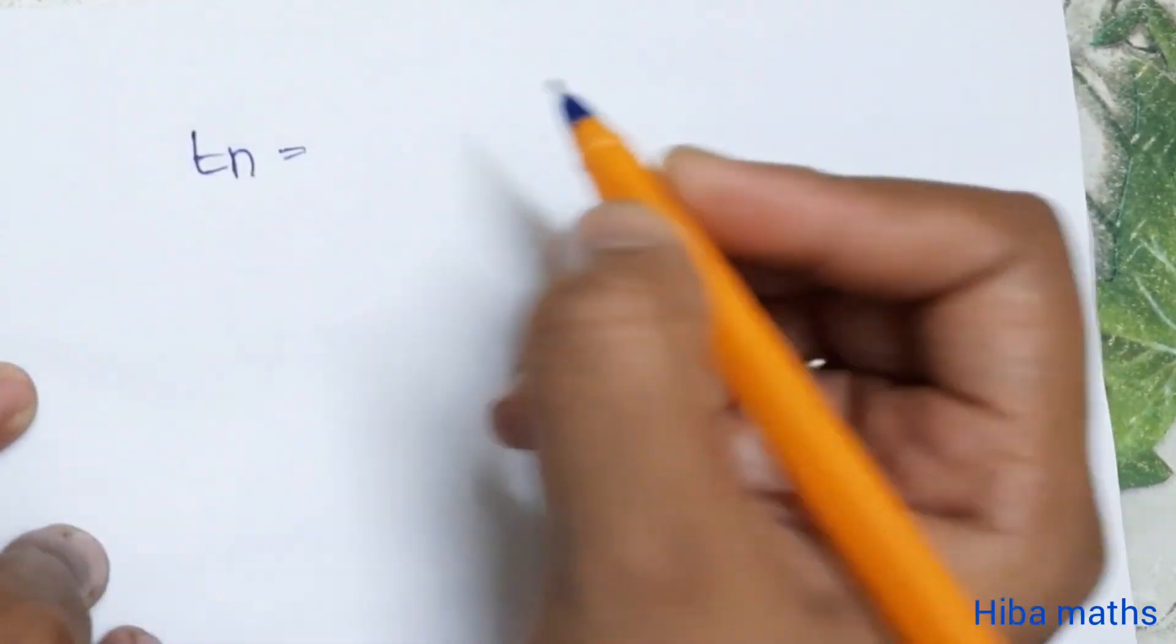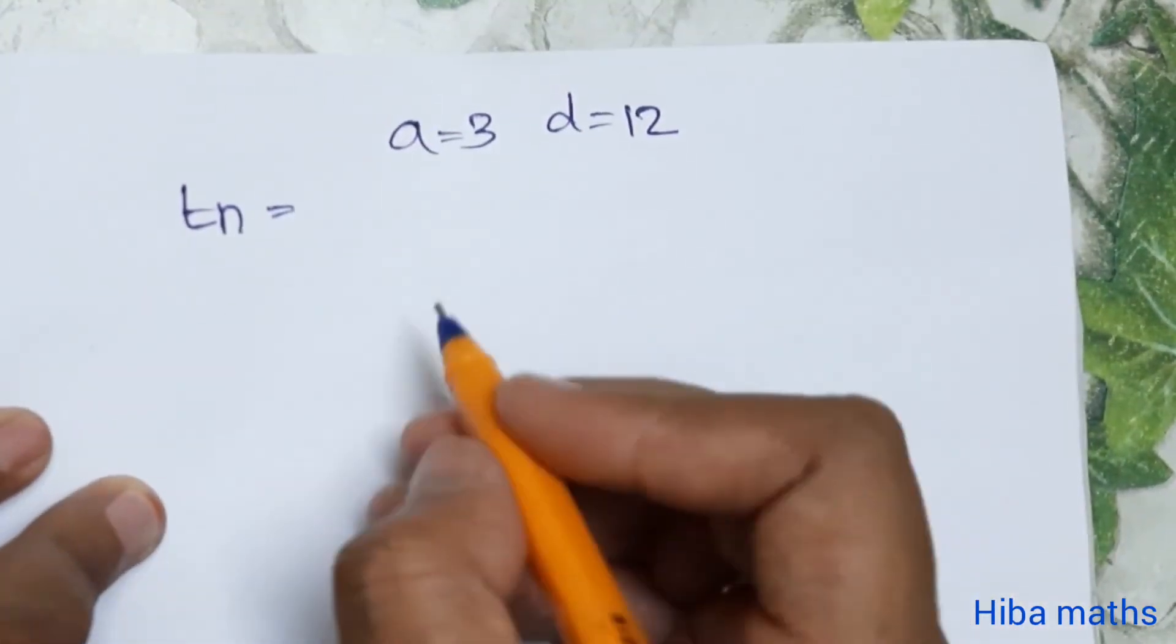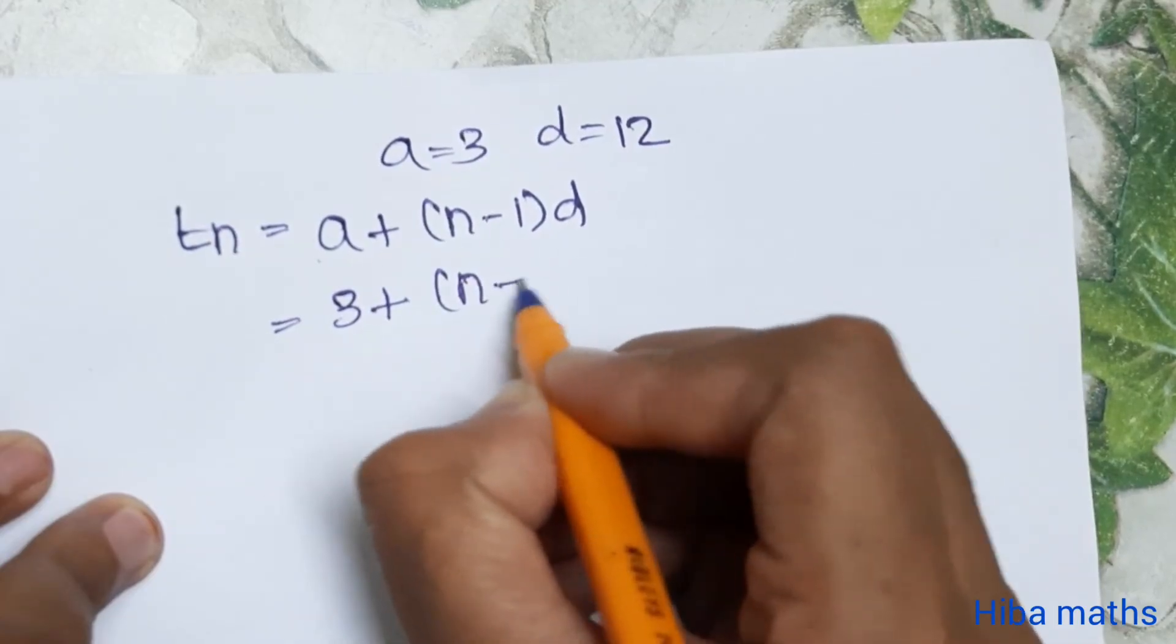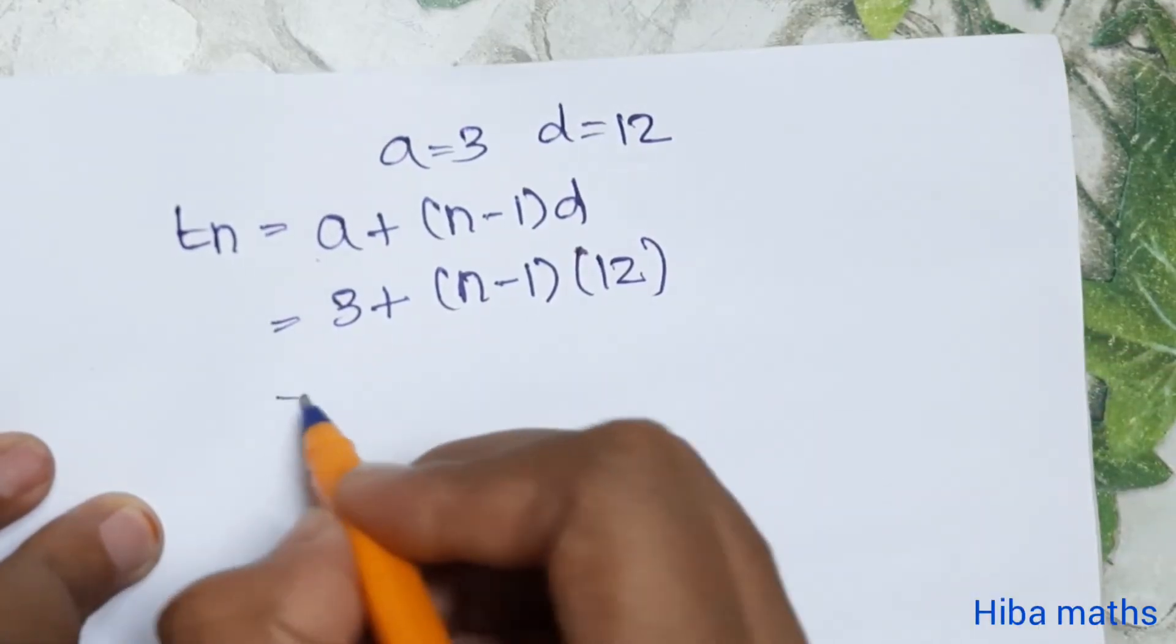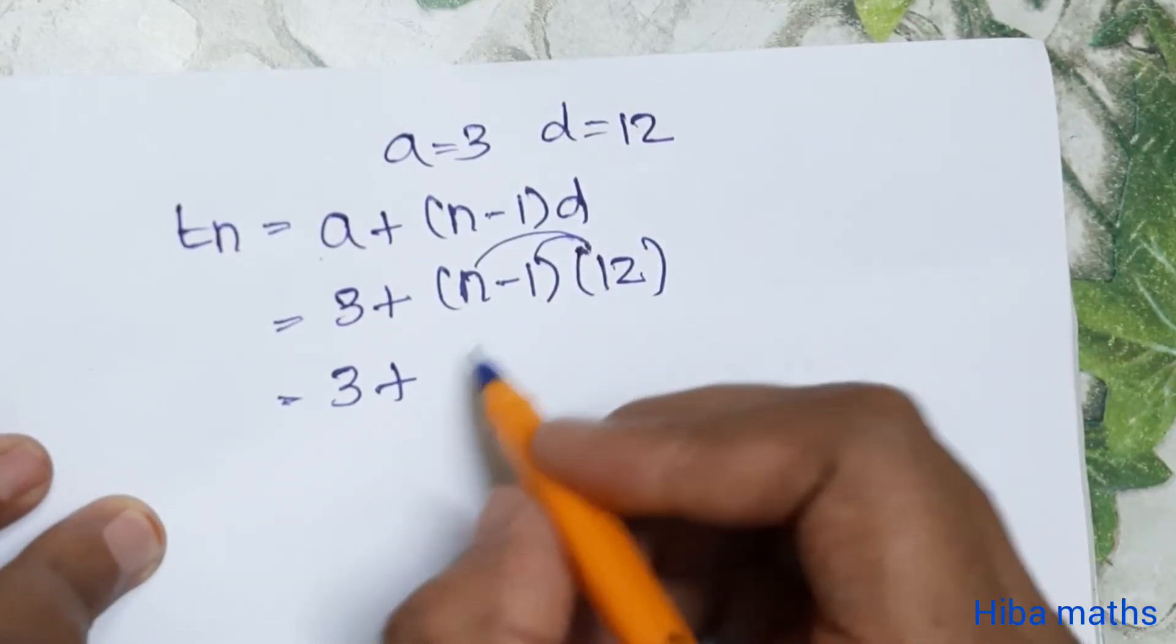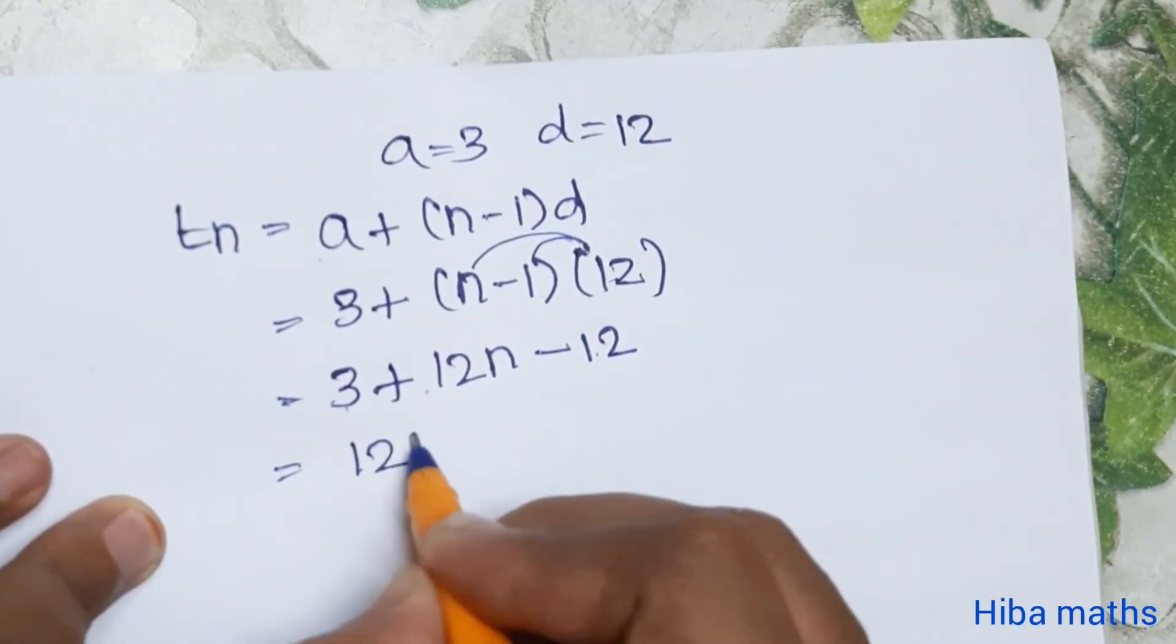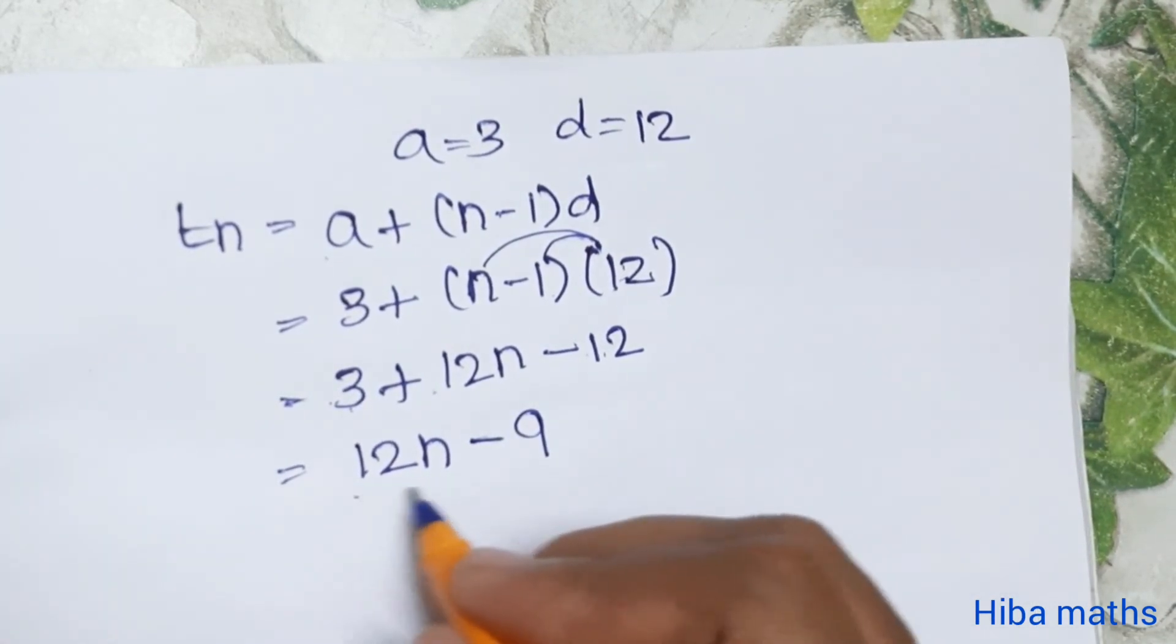So t of nth term, t of n formula is a plus n minus 1 into d. A value is 3, d value is 12. 3 plus n minus 1 into 12. 12 into n minus 12, so 12n minus 12 plus 3 is 12n minus 9. So general form, 12n minus 9.